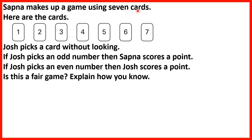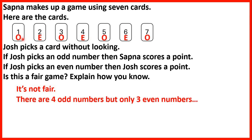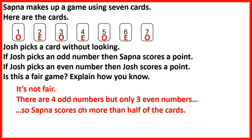Sapna makes up a game using seven cards. Josh picks a card without looking. If Josh picks an odd number then Sapna scores a point; if he picks an even number then Josh scores a point. Is this a fair game? It's not fair because odd numbers end in 1, 3, 5, 7 or 9 and even numbers end in 2, 4, 6, 8 or 0. Looking at the cards, there are four odd numbers but only three even numbers, so Sapna scores on more than half the cards. It's not a fair game.